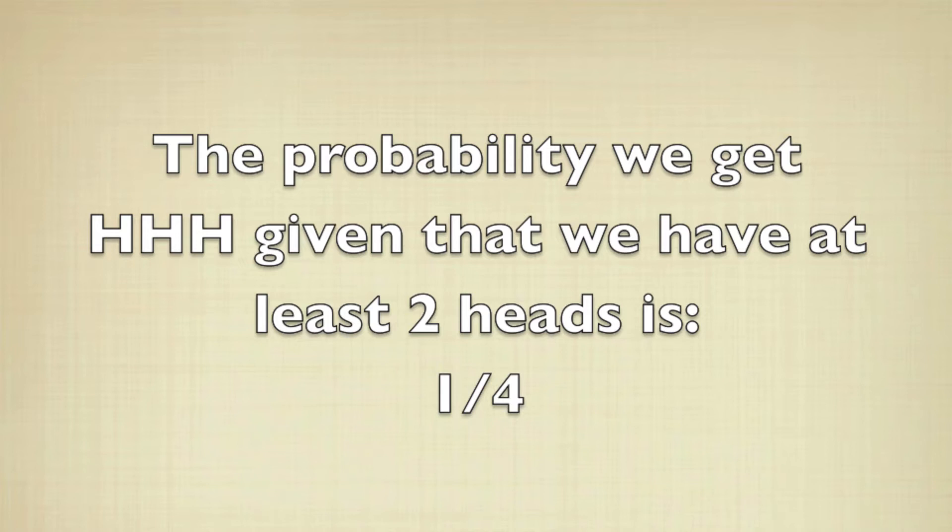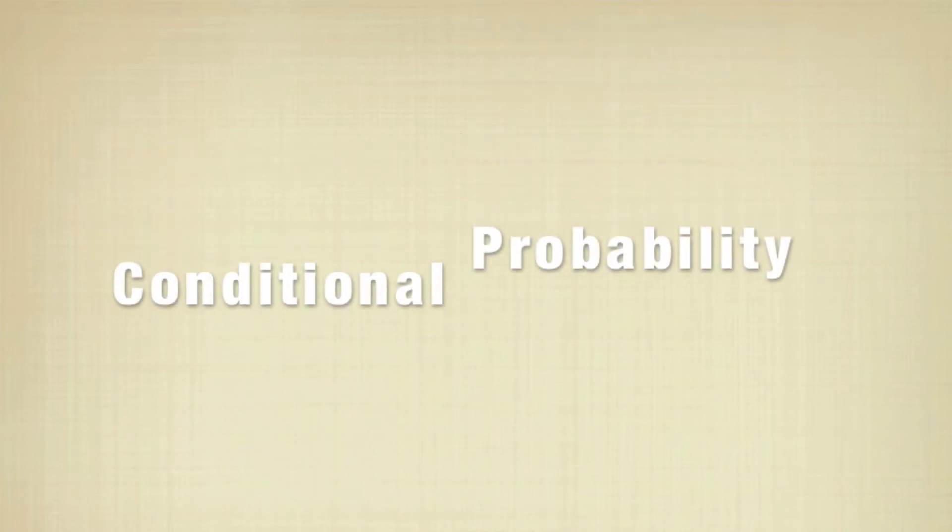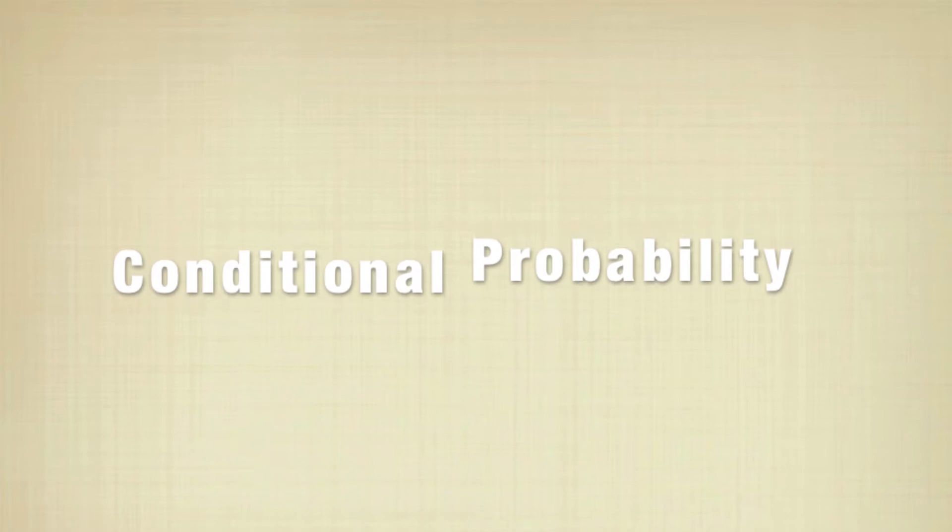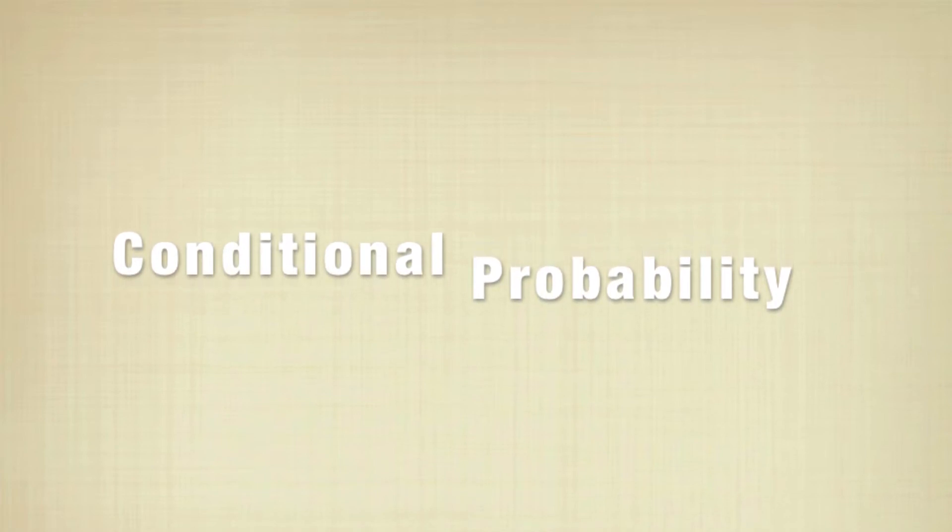This is called a conditional probability. When we have additional assumptions, we restrict the sample space so that the only outcomes we care about are the ones that satisfy our assumptions.